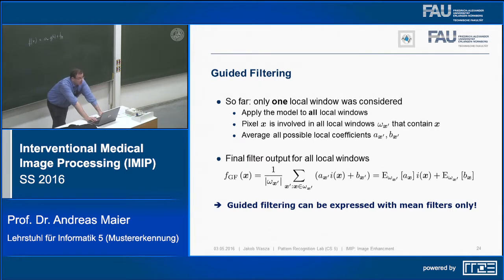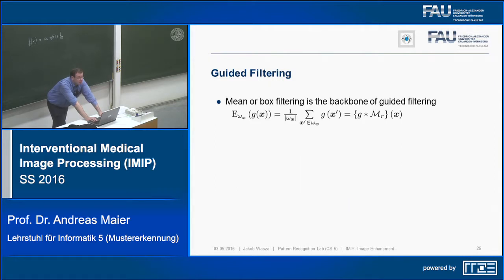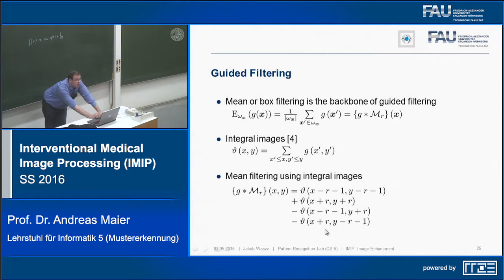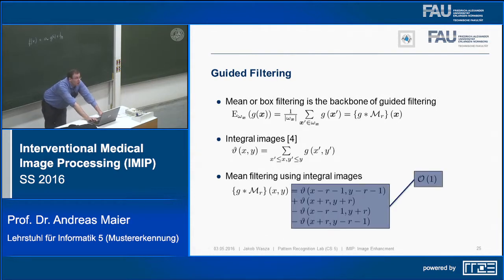Applying this additional averaging over local coefficients helps reduce unstable, noisy results. The entire computation can be expressed with mean filters only. These mean filters are computed very efficiently using integral images: sum up all values left and top of the current pixel position. The mean filter result for any window can then be obtained with just four values from the integral image — four additions, complexity O(1) per pixel, independent of kernel size.